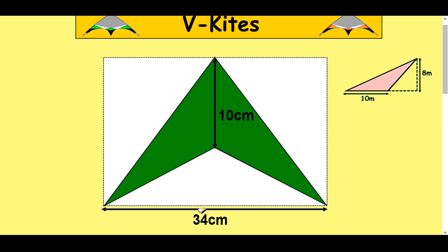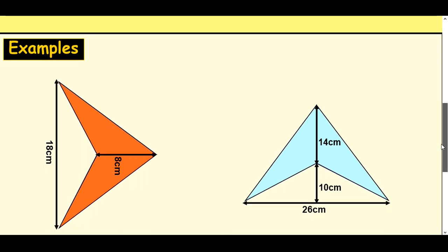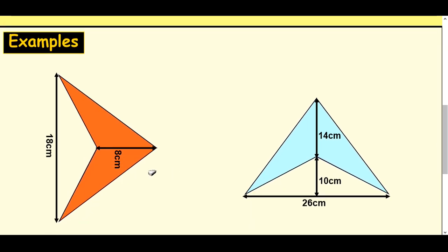So we can just do the same thing: diagonal times diagonal this time here and divide it by two. So the formula works exactly the same for this using that theory of this type of triangle. So let's have a look at two examples here I've got.